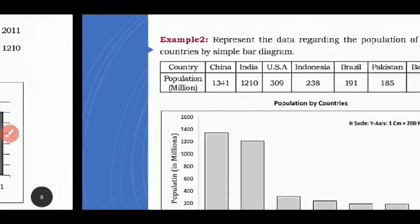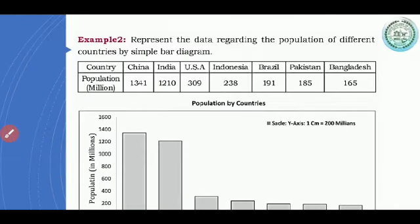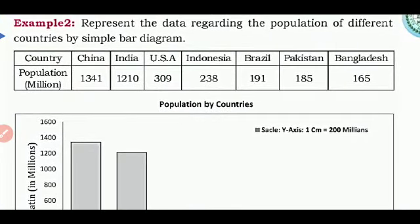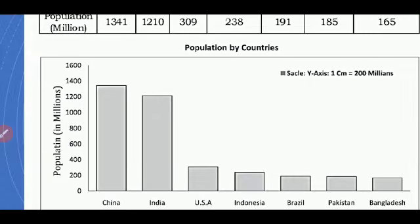Represent the data regarding the population of different countries by simple bar diagram. In this example, what we are going to see there, the population is represented of different countries. It is given and we are going to represent that in a simple bar diagram. First, China is given, India is there, USA, Indonesia, Brazil, Pakistan and Bangladesh. So, who is the highest here? The highest value is China. That is 1341.